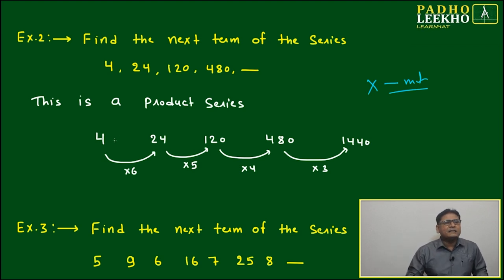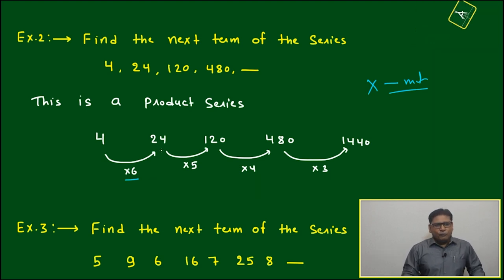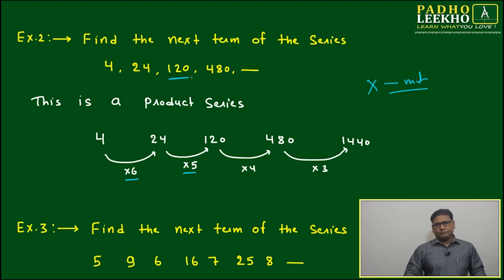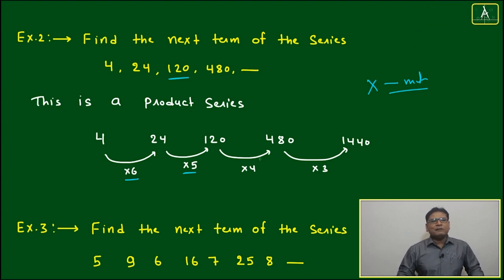Let's try to understand: if you multiply 4 by 6, it becomes 24. Then 24 multiplied by 5 equals 120. And 120 multiplied by 4 gives 480, the next term.